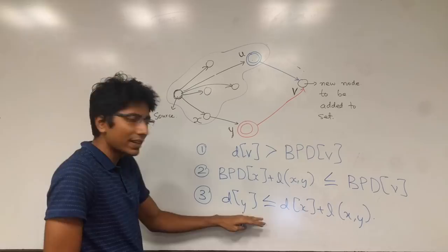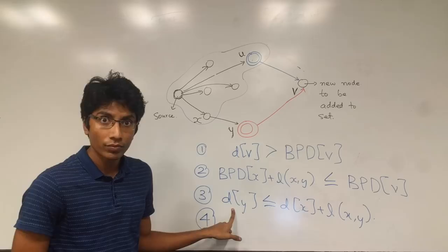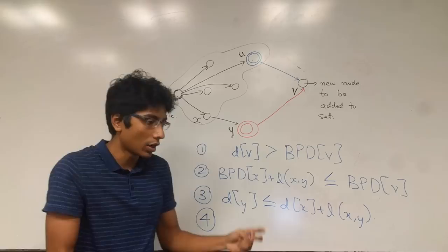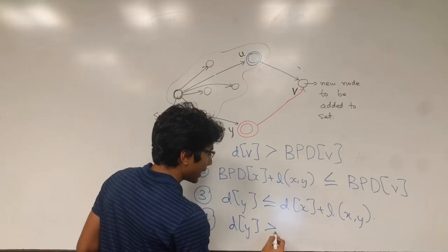The fourth condition is that we did not go to d of y before we went to d of x. This was added to the set, meaning that of course that distance from the source is lesser than the distance to y from the source. So d of y is greater than or equal to d of x.